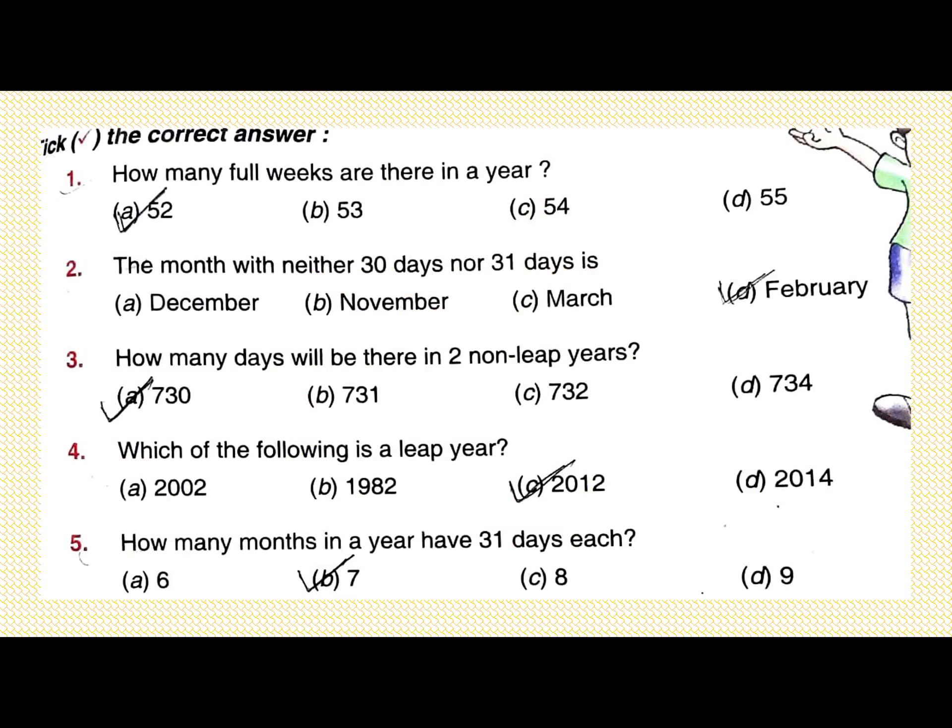Question number 4: which of the following is a leap year — 2002, 1982, 2012, or 2014? When we divide by 4, only 2012 is divisible by 4, that's why it's a leap year. Question number 5: how many months in a year have 31 days? There are 7 months having 31 days. Part B is correct.